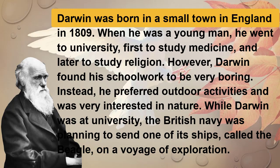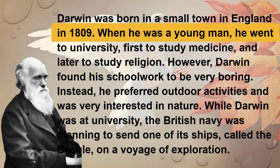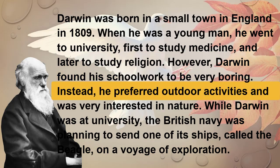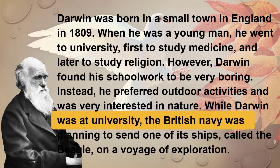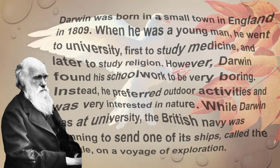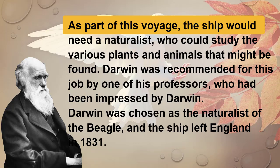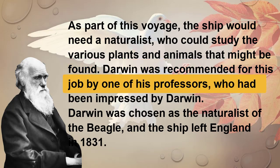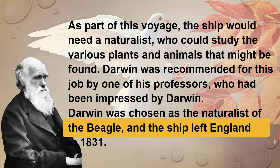Darwin was born in a small town in England in 1809. When he was a young man he went to university, first to study medicine and later to study religion. However, Darwin found his schoolwork to be very boring — instead he preferred outdoor activities and was very interested in nature. While Darwin was at university, the British Navy was planning to send one of its ships, called the Beagle, on a voyage of exploration. The ship would need a naturalist to study the various plants and animals that might be found. Darwin was recommended for this job by one of his professors, and he was chosen as the naturalist of the Beagle. The ship left England in 1831.